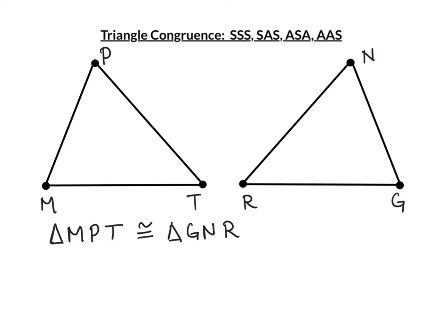We can see that because M is first, angle M is congruent to angle G, which is also first. Angle P is congruent to angle N because they're both second. And angle T, being third, is congruent to angle R, also third. Now we can also tell, by looking at the angles, which sides correspond.